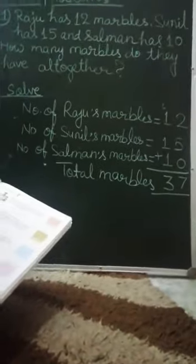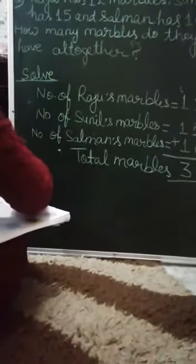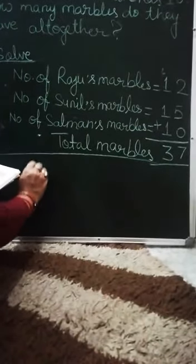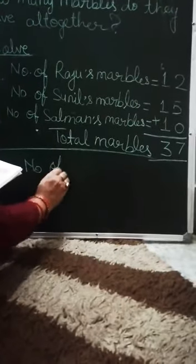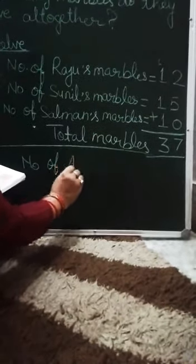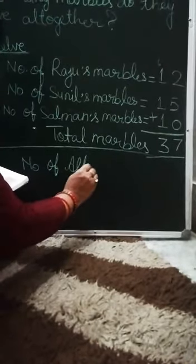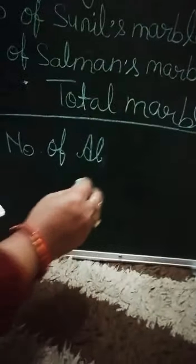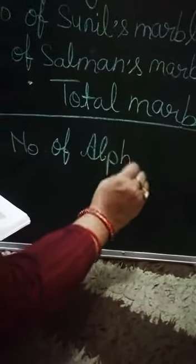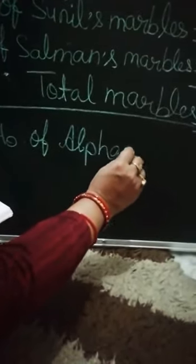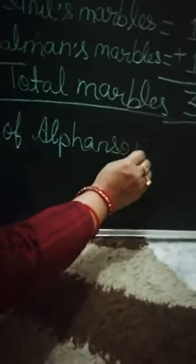You can also use the same pattern. What do you need to do next? Number of Alphonso mangoes. Start here. I will tell you the solution. You have to do it.